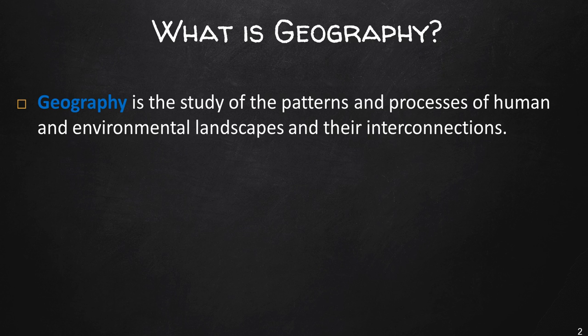Deconstructing this definition, we can think of human patterns and processes as cities and how they develop. For example, why is Boise the most populous city in Idaho? Or how religions or other cultural beliefs originate and diffuse, to the building of a dam? Humans are interconnected to Earth and help shape the physical Earth. The natural environment is thought of as the physical Earth and the atmosphere — things such as earthquakes, which have distinct patterns, the formation of mountains through plate tectonics, and climate and weather. These are just some of the environmental landscapes geographers are interested in.